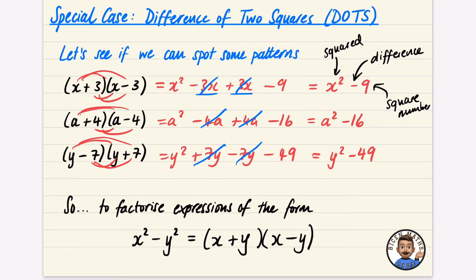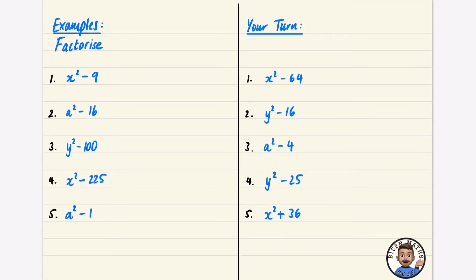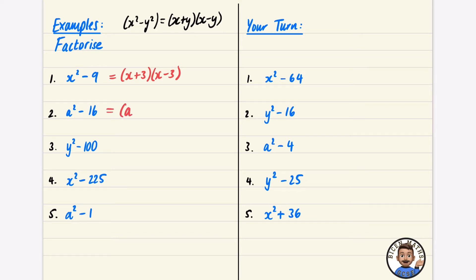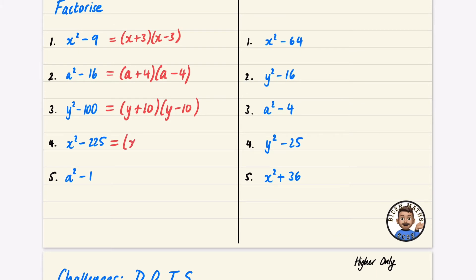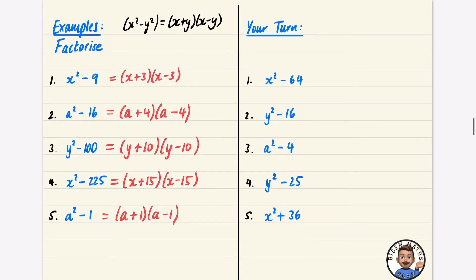The standard form is x squared minus y squared equals (x+y)(x−y). Let's do five examples: x squared minus 9 gives (x+3)(x−3); a squared minus 16 gives (a+4)(a−4) since the square root of 16 is 4; y squared minus 100 gives (y+10)(y−10); x squared minus 225 gives (x+15)(x−15) since the square root of 225 is 15; and a squared minus 1 gives (a+1)(a−1). Now pause and try some yourself.